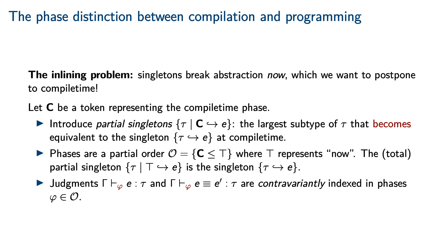The inlining problem was in essence that singletons break abstraction now, but we want to postpone that to compile time. We will write c for a token representing the compile time phase, and introduce a generalization of the singleton types of Stone. In particular, we will introduce a partial singleton type, tau c maps to e, which is the largest subtype of tau that becomes equivalent to the singleton tau maps to e at compile time. That is, an element of tau c maps to e is an arbitrary element of tau that, if you were in the compile time phase, would have to be equal to e. C is just one of many phases, which we will arrange into a partial order with a top element. The top element represents now, and the total partial singleton — the partial singleton for the top phase — is just the ordinary singleton type.